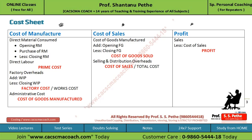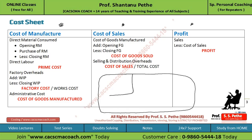Before trying to understand all these things, let's understand the structure of an organization. Suppose this is one organization — in one part of it, production is going on, that is, manufacturing is going on. We can call it a factory. Apart from the factory, there is an administrative setup where HR functions and administrative functions happen, and offices of this organization are located.